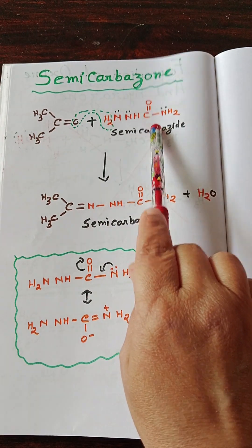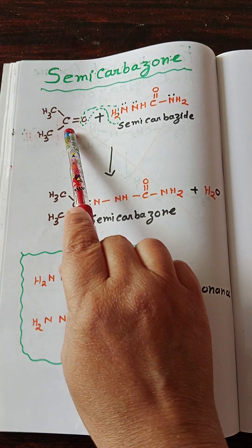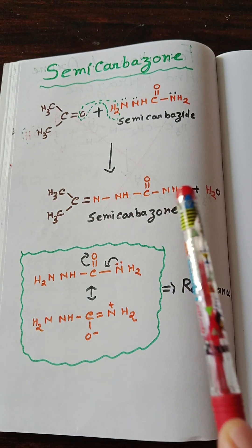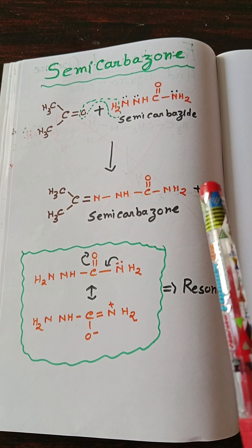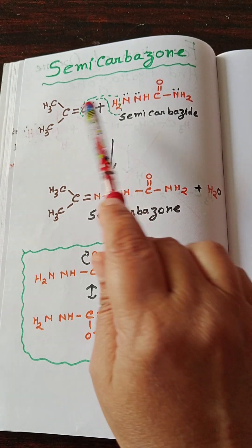This reaction follows the nucleophilic addition mechanism, and that's why the lone pair availability for donation is very important. The NH2 that's available donates to the carbonyl carbon and forms the product.